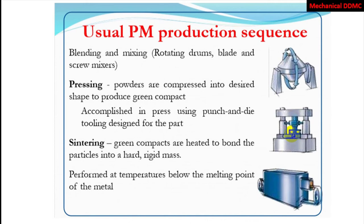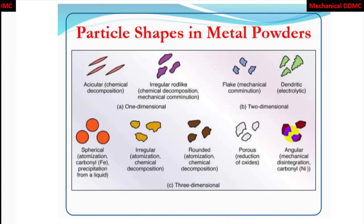We call this shape a green compact — not green in color, but the term 'green compact' refers to the compacted but not yet sintered product. Sintering means the green compacts are heated to bond the particles into a hard, rigid mass, similar to welding. At higher temperatures, when particles of the same or different metals are sintered or treated with heat, they bond together and compact into one product with high strength.